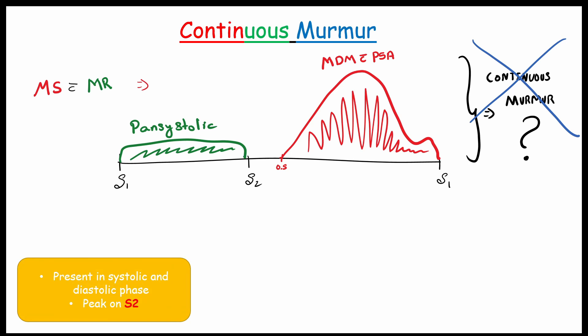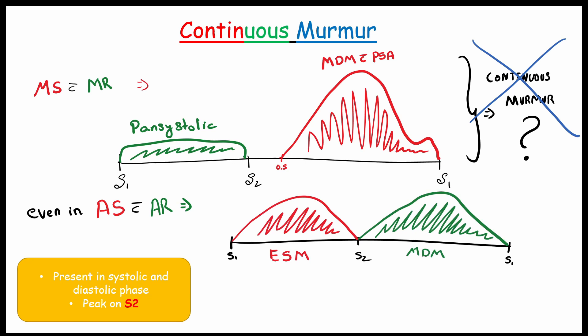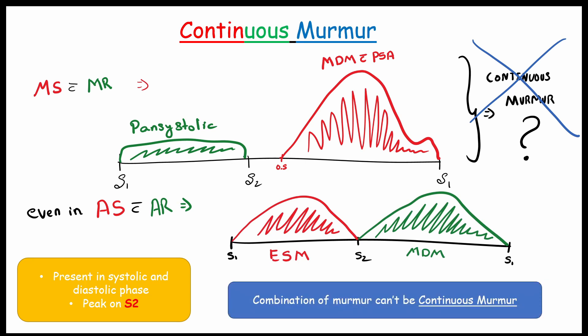In here, it is not completing the second characteristics. Even in the patient having aortic stenosis with aortic regurgitation, we can see ejection systolic murmur and mid-diastolic murmur. But this is also not a continuous murmur. So from this, we can conclude combination of murmur cannot be continuous murmur.